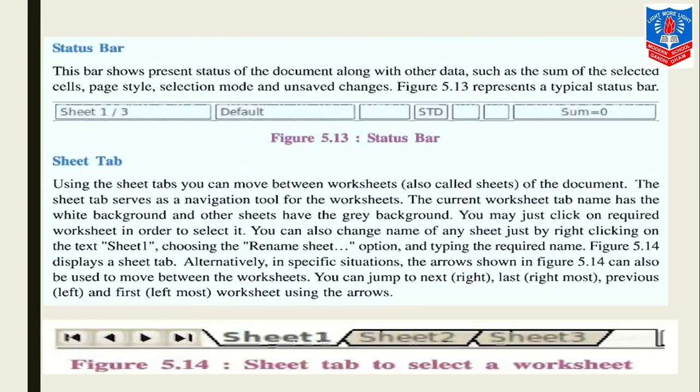Now we talk about the status bar. The status bar shows the present status of the document along with other data such as the sum of selected cells, page style, selection mode, and unsaved changes. You can see this is the status bar - sheet one out of three, and it is default. You can see the details over here. Sum equals zero.